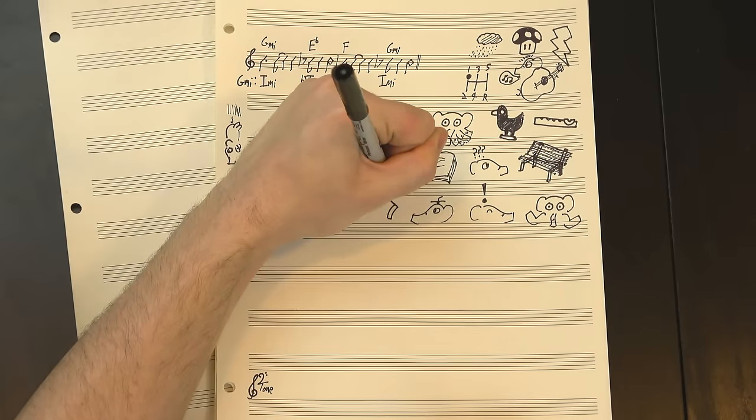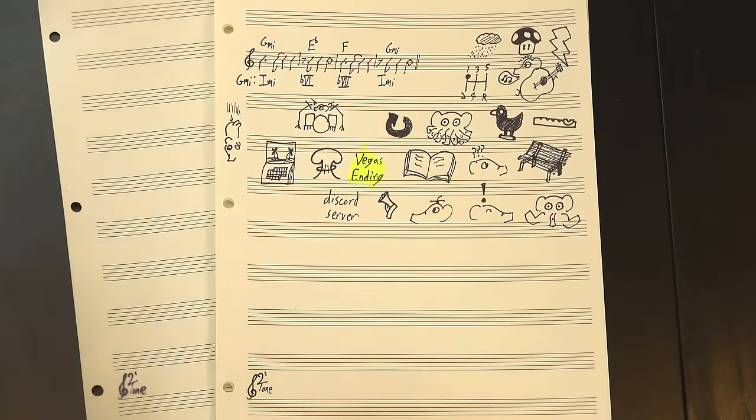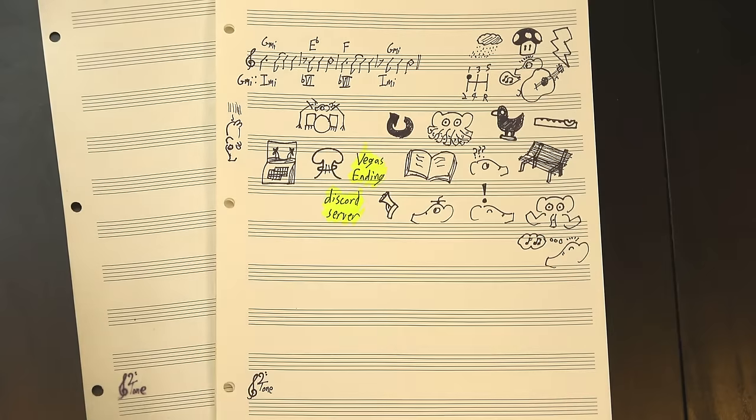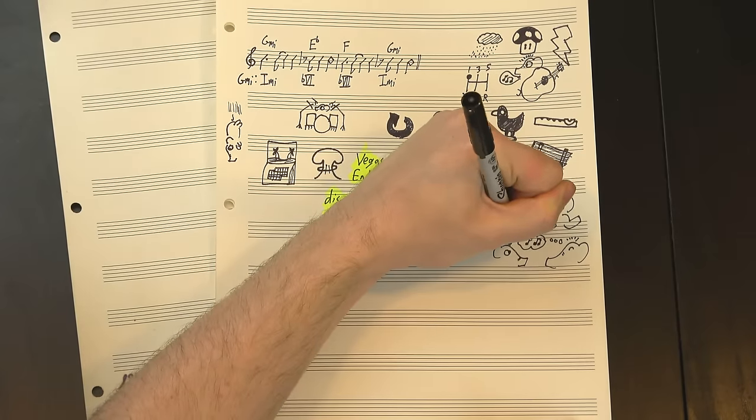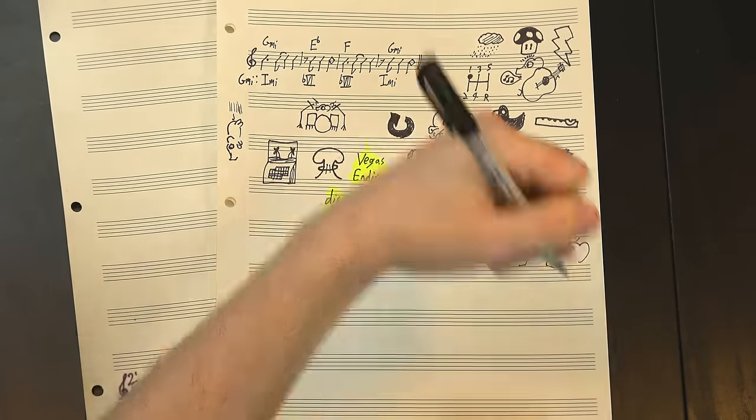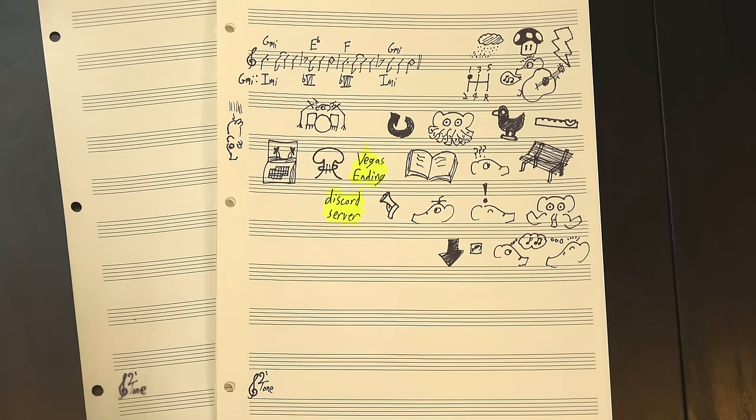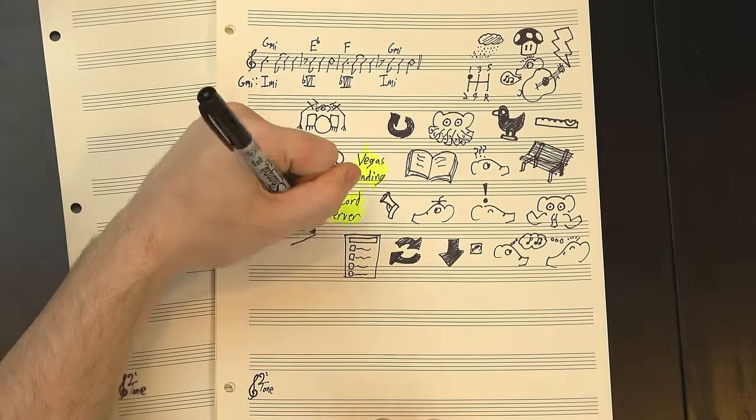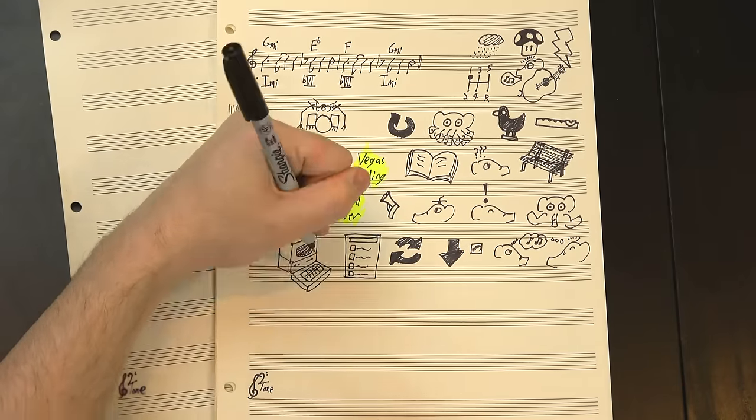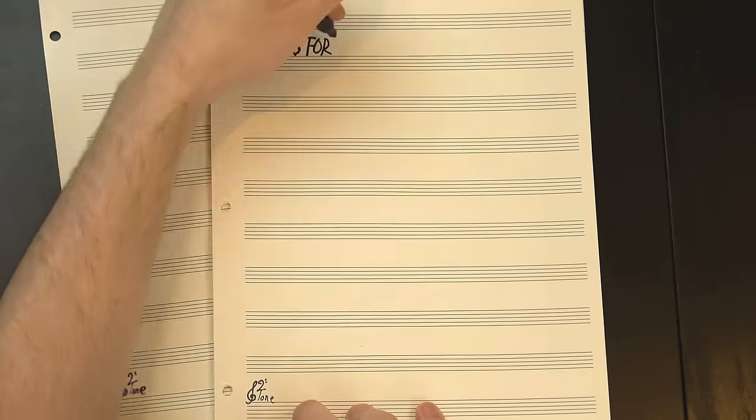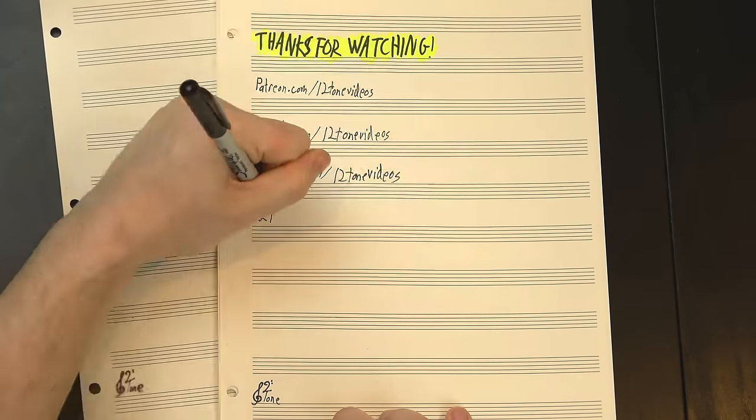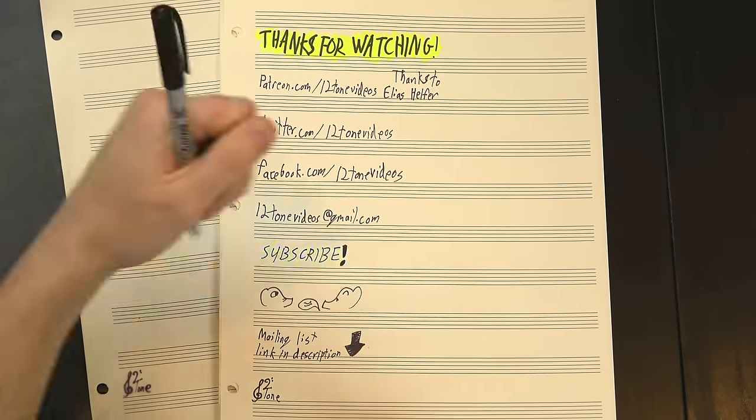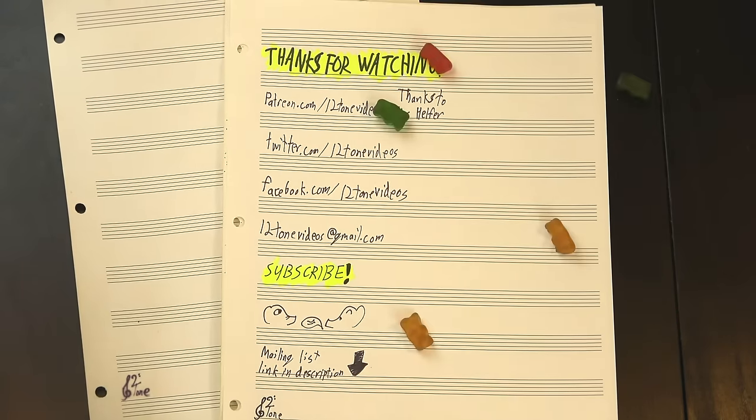And that's pretty much it, but before we go, quick announcement. There's a 12-tone Discord server now. If you've made it this far, I'm gonna guess you like music theory, so why not join and talk about music theory with other folks who also like music theory. Also, there's custom elephant emojis, so that's fun. Link in the description. Also, we're switching things around on Patreon, so from now on songs will be chosen by our patrons through a poll, so if you want to help us pick the next one, just head on over to Patreon. And thanks for watching, and thanks to Patreon patron Elias Helfer for suggesting this song. If you want to get updated on new 12-tone episodes, you can check out our mailing list, like, share, comment, subscribe, and above all, keep on rockin'!